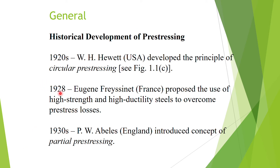In 1928, Eugene Freyssinet from France proposed the use of high strength and high ductility steels to overcome pre-stress losses. By this time, technology had advanced enough to develop such materials. Freyssinet became the pioneer of the modern pre-stressing system.